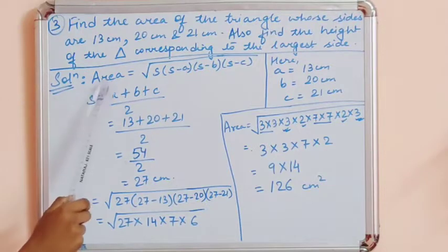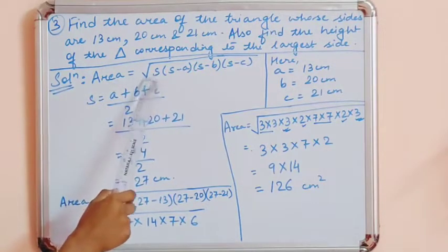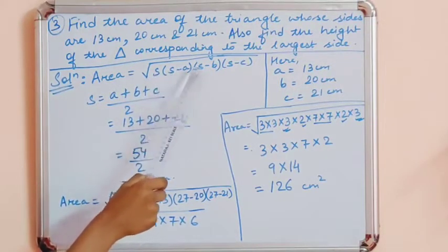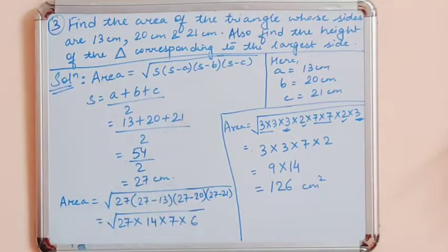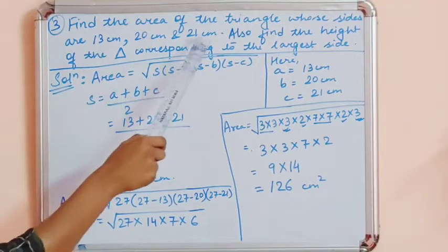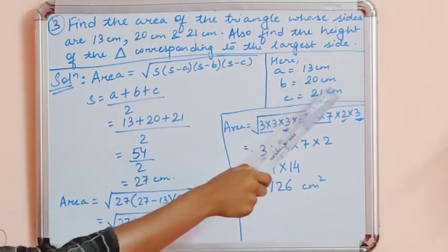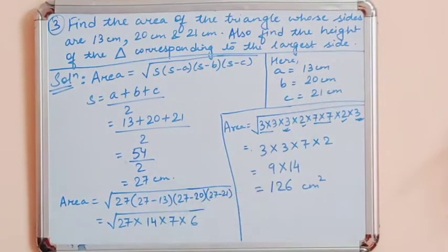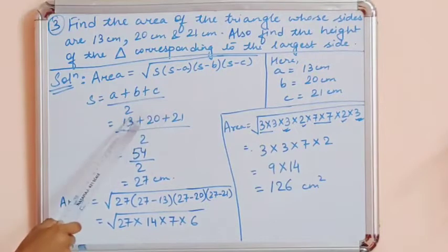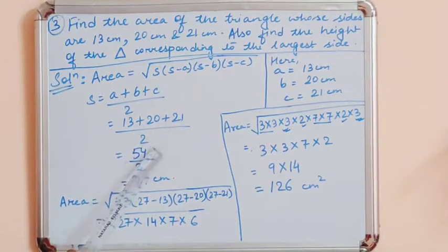Heron's formula is: area = √(S × (S−A) × (S−B) × (S−C)), where A, B, and C are the three sides of the triangle. Here A = 13 cm, B = 20 cm, and C = 21 cm. S equals (A + B + C) / 2, so S = (13 + 20 + 21) / 2 = 54 / 2 = 27 cm.